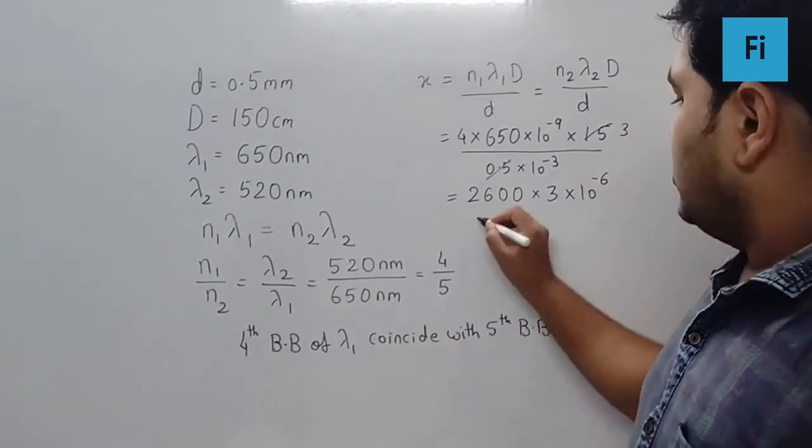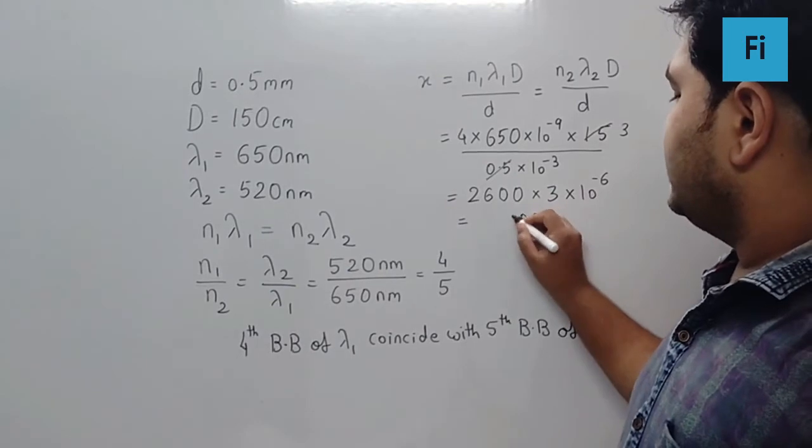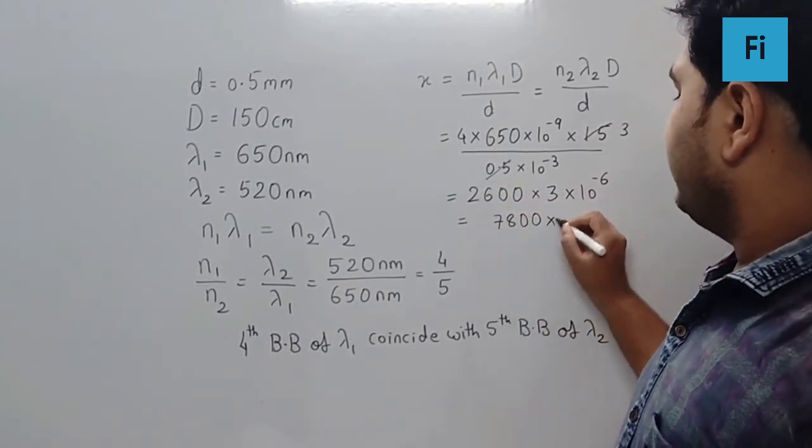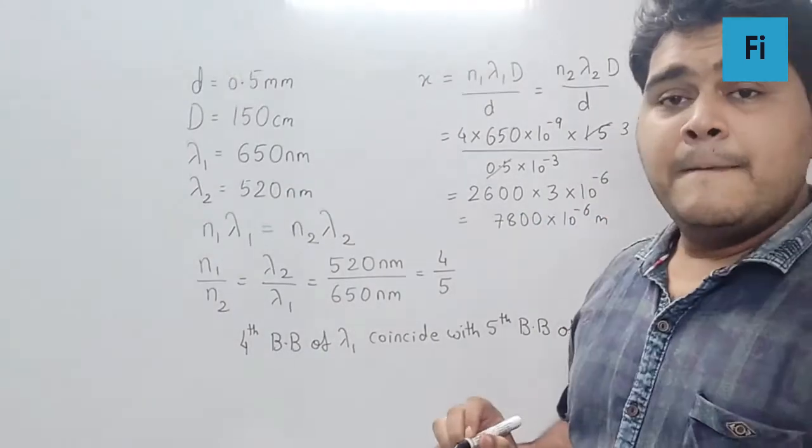So now we can multiply by 3. We get 0, 0, 3, 6 times 8 is 0, 1 carry. 3 times 2 is 6 plus 1, 7, 8, 0, 0, times 10 raise to minus 6 meter.